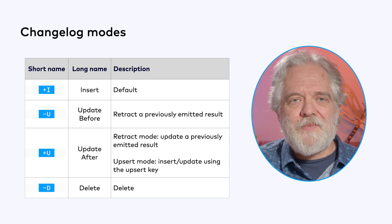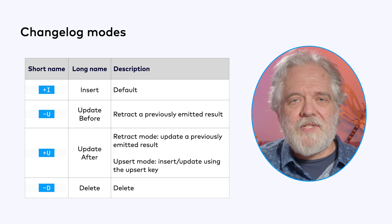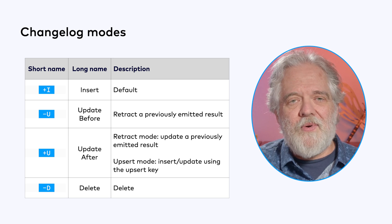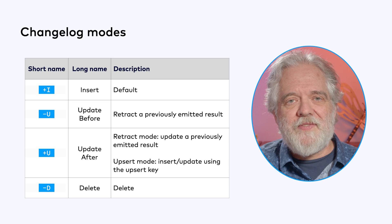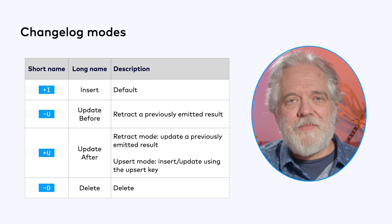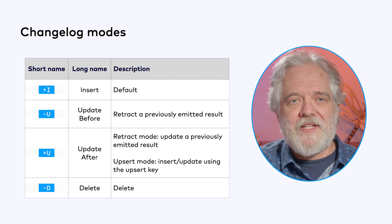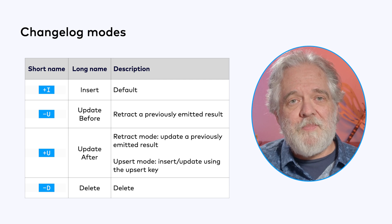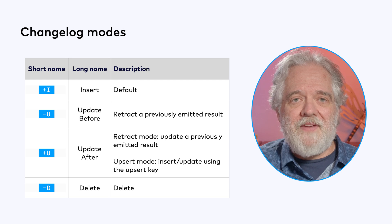In total, there are four different types of changes that can appear in a changelog stream. Insert is the default mode used by source tables — the short name for this mode is "+I". Update before, or "-U", represents the retraction of a previously emitted result, and is only used by retracting streams. "+U" is known as update after. In a retracting stream, this event supplies the updated information for the record that has just been retracted. In upsert mode, a "+U" inserts or updates the record identified by the upsert key. And finally, there's also a way to represent deletions.